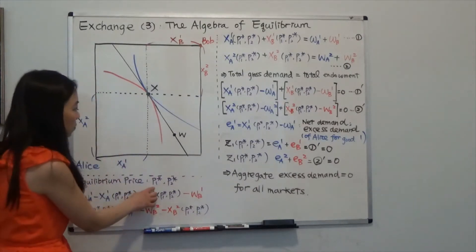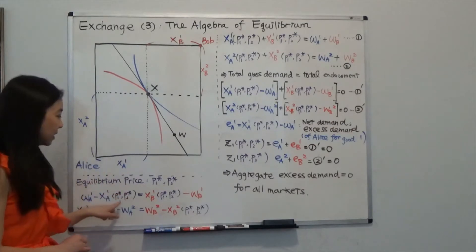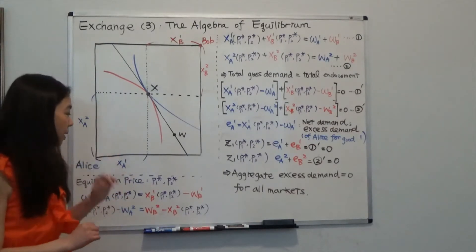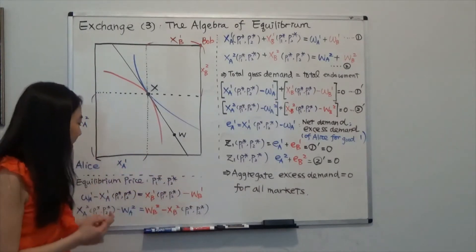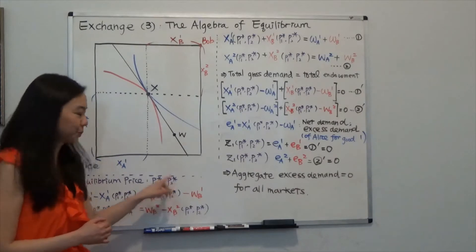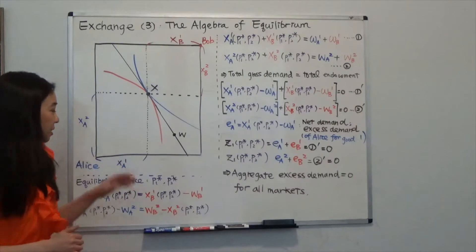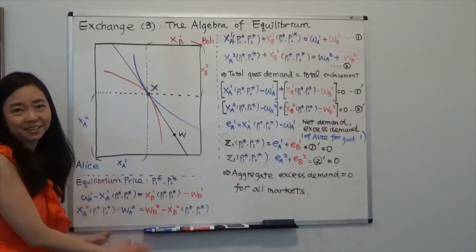That means with price P1 star and P2 star, the amount of good one that Alice wants to sell is exactly equal to the amount of good one that Bob wants to buy. And at the same time, with this price vector, the amount of good two that Bob wants to sell is exactly equal to the amount of good two that Alice wants to buy. So the market clears.